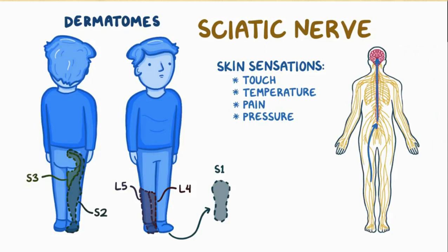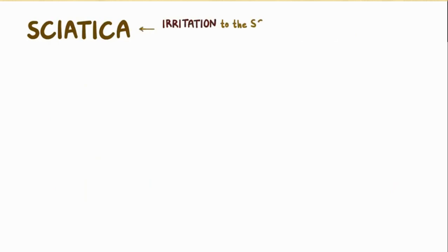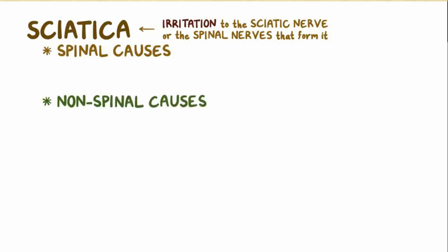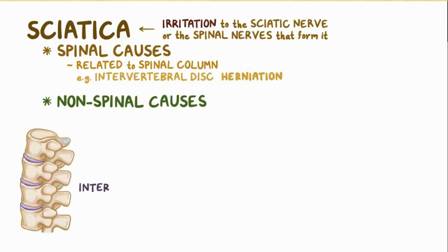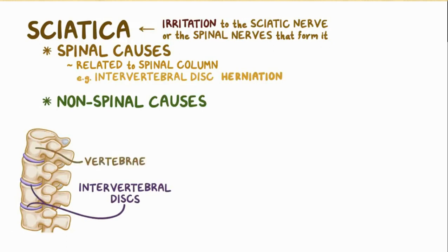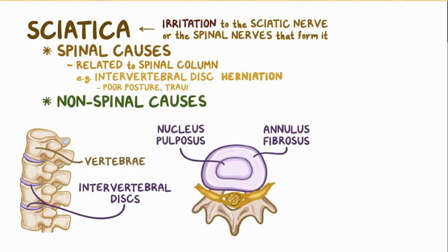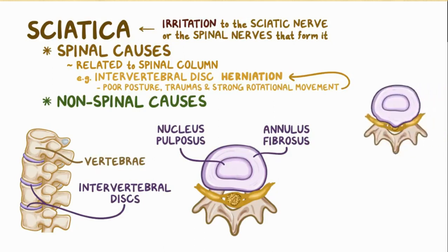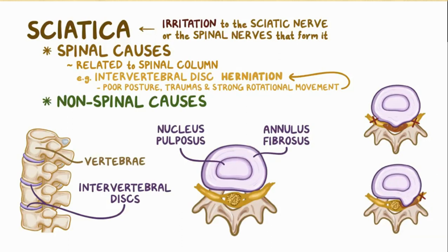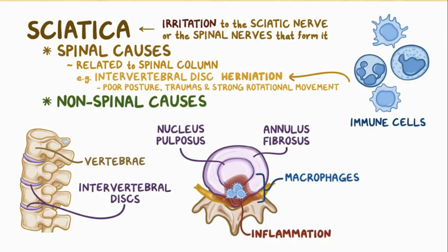Sciatica occurs when there is irritation to any part of the sciatic nerve or the spinal nerves that form it. Causes are divided into spinal and non-spinal. The most common spinal cause is intervertebral disc herniation. Each disc is made of an outer fibrous ring called the annulus fibrosus and an inner gel-like pulp called the nucleus pulposus. Poor posture, trauma, physical activity, and strong rotational movement can cause herniation where the disc bulges out — towards the center compressing multiple nerve roots, or laterally compressing one nerve root.